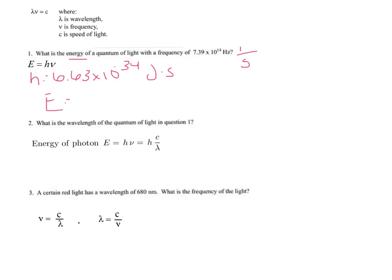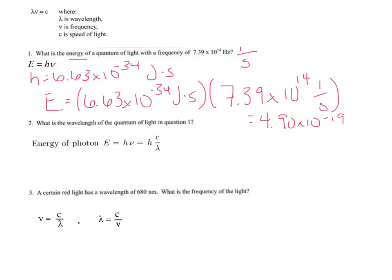E is equal to 6.63 times 10 to the negative 34th joules times seconds. You need to include your units in all of your calculations, times nu, which is 7.39 times 10 to the 14th, 1 over second. That would give us an answer of 4.899, which with sig figs is 4.90 times 10 to the negative 19th. And the units for this, the seconds cancel out, leaving you with joules. So there's your answer for the first one.